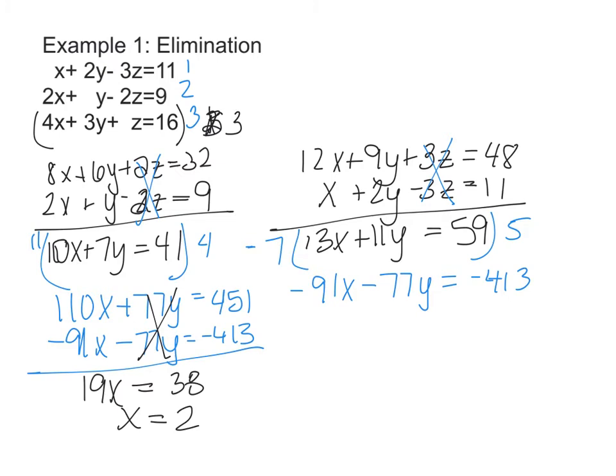Now I know that x = 2. I can plug it into either equation 4 or equation 5 to find y. So I'm going to plug it into equation 4. 10 times 2 + 7y = 41. That's 20 + 7y = 41. 7y = 21 when I subtract 20 from both sides, and y is equal to 3.